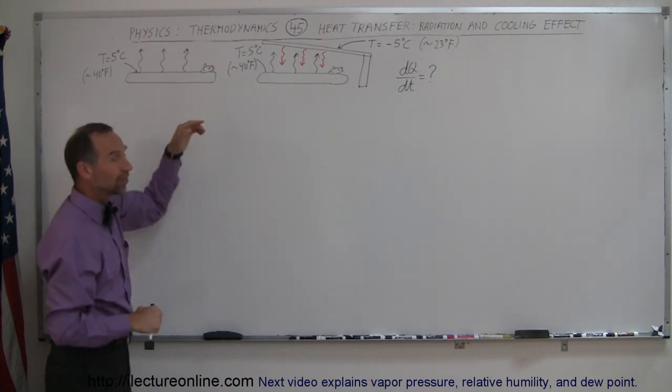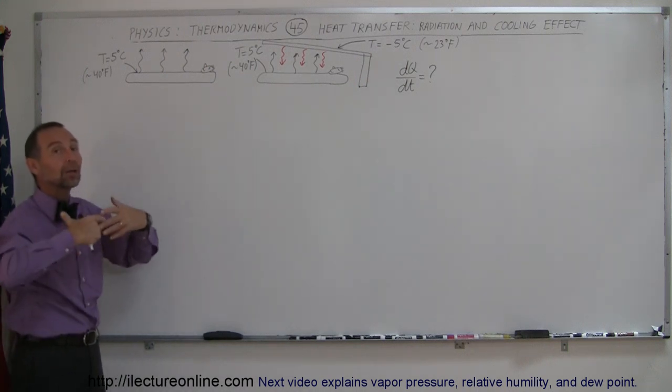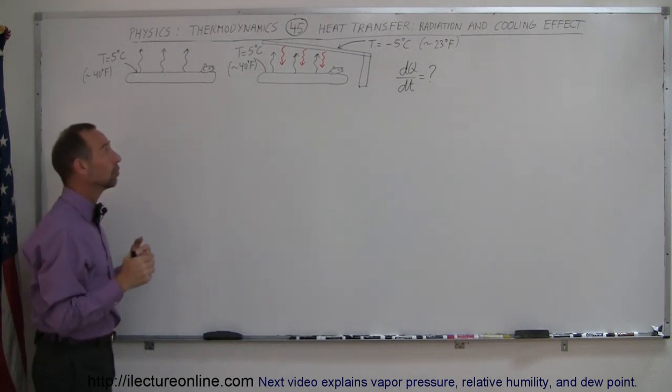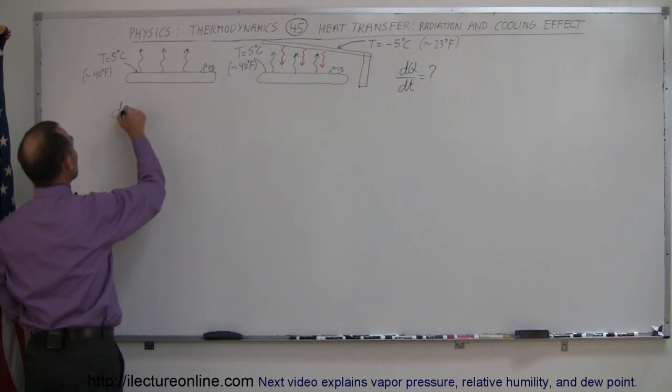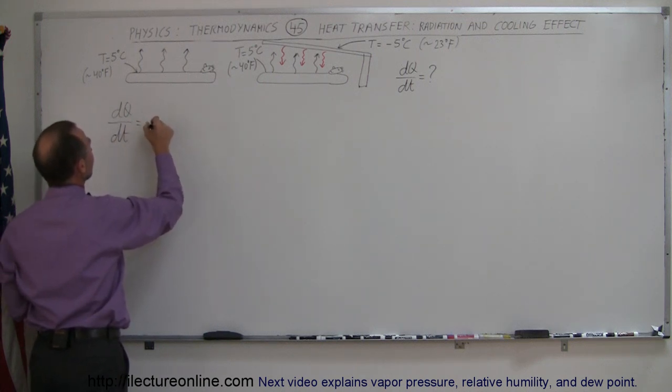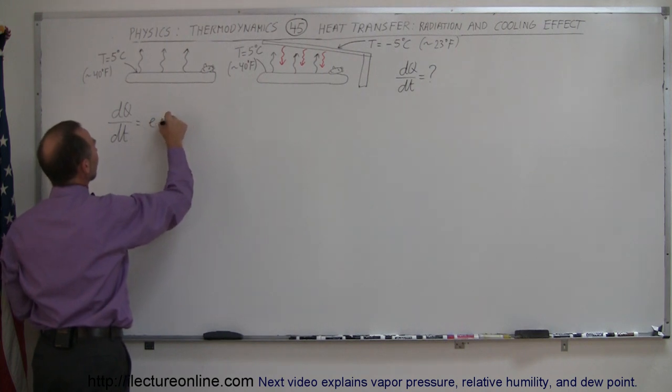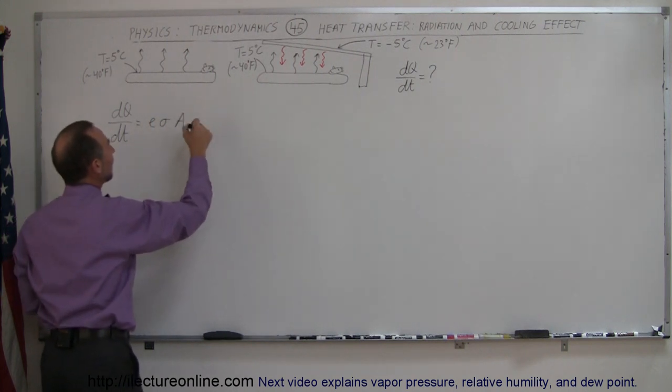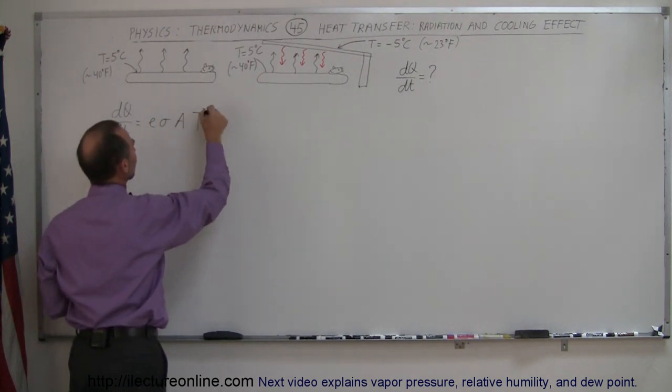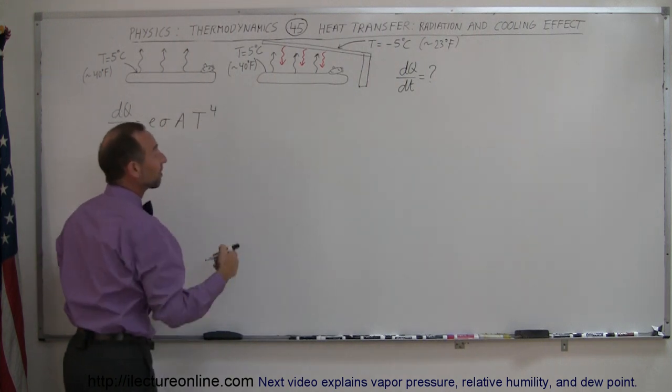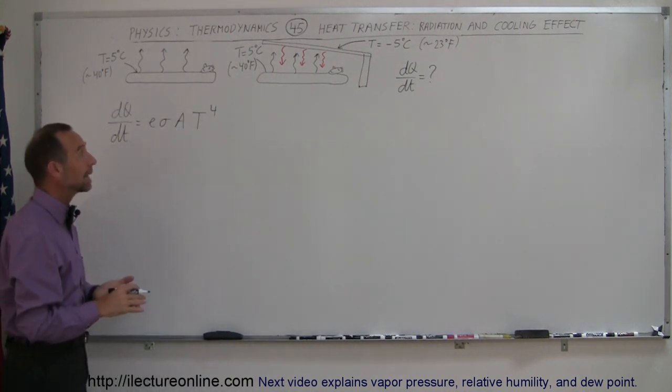And secondly, the warmer the outside temperature of the sleeping bag, the more that it will radiate out into space because the dQ/dt, the amount of heat irradiated per unit time, is equal to E sigma, the area, and then of course the temperature to the fourth power. So the warmer the outside of the bag is, the more heat it's radiating out.